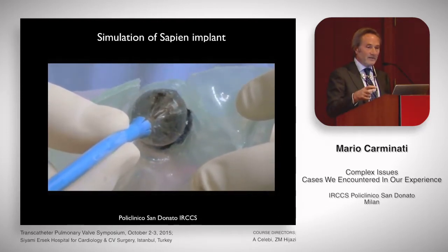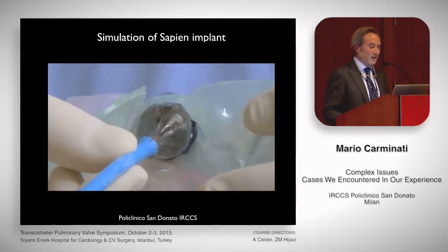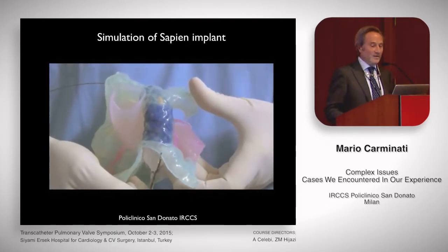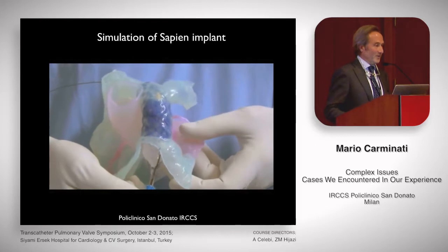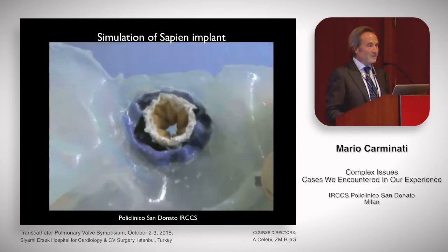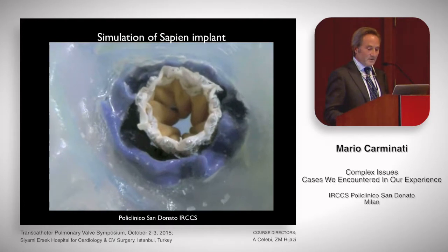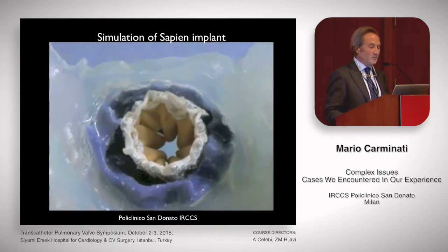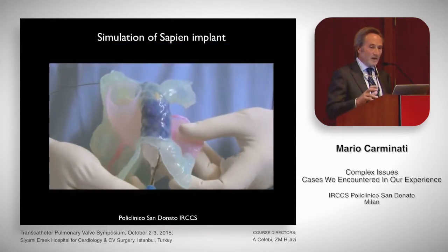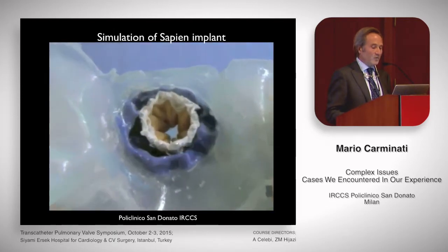This is the SAPIEN valve. We simulated the SAPIEN implant taking into account the size, the length, the anatomy. And it was rather very easy to implant the SAPIEN in the 3D model. We then planned to implant a 23 SAPIEN because of the bulky structure and not very large conduit.